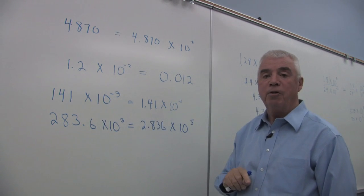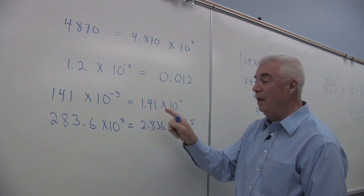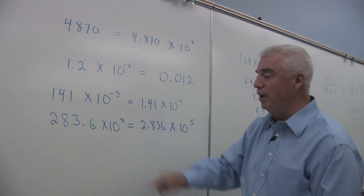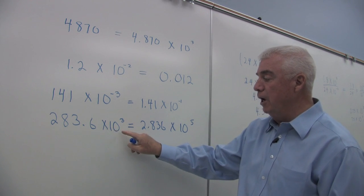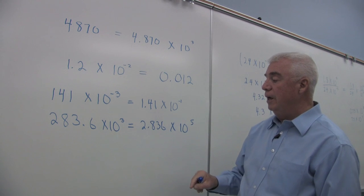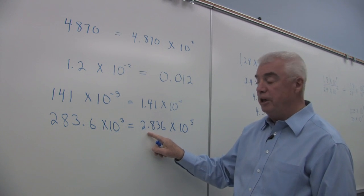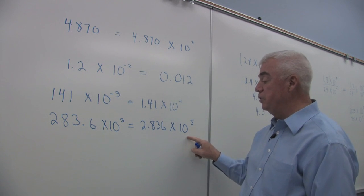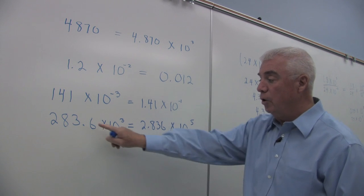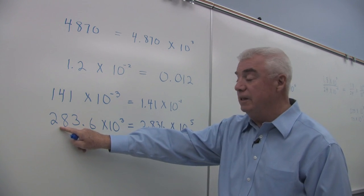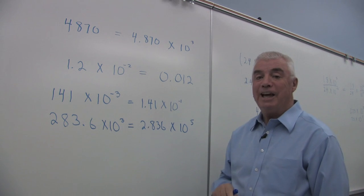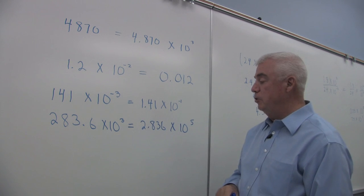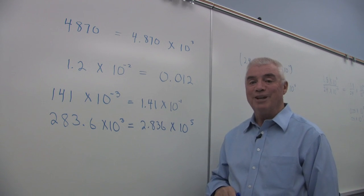You could convert both of these to the long form and verify that they're the same number. Now let's look at the second example: 283.6 times 10 to the third. Put the decimal after the first digit to get correct scientific notation — times 10 to the something. Moving the decimal two places to the left, I balance that by indicating two more places to the right. Two and three make five, so the answer is 2.836 times 10 to the fifth.